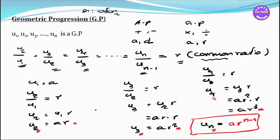So the pattern becomes clear: U2 = E·R, U3 = E·R², U4 = E·R², U5 = E·R⁴, U6 = E·R⁵, U7 = E·R⁶, U10 = E·R⁹, U15 = E·R¹⁴, U17 = E·R¹⁶, U100 = E·R^99. The exponent is always one less than the term number.